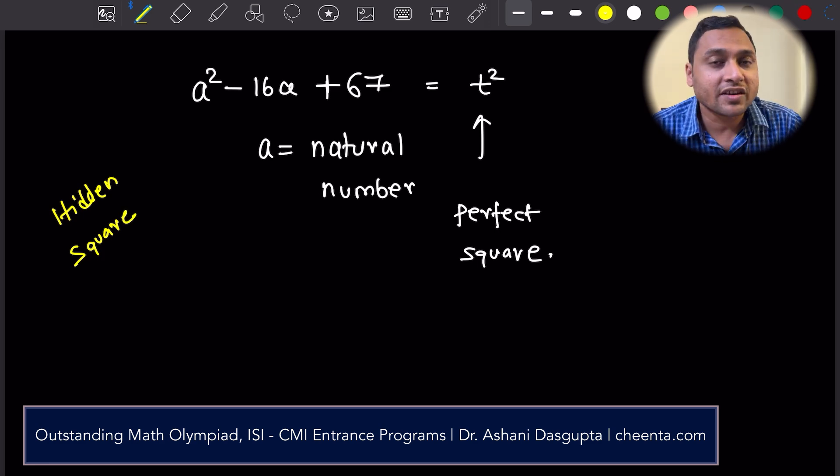Hidden square observation. This is a very important thing. In one of the sides of the equation, if you can extract a square, that is often useful.